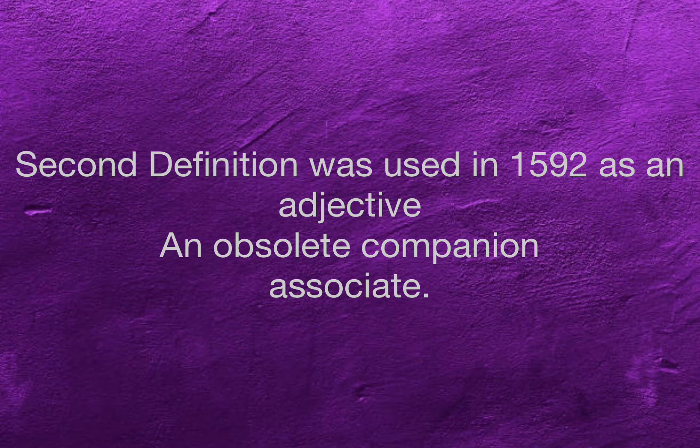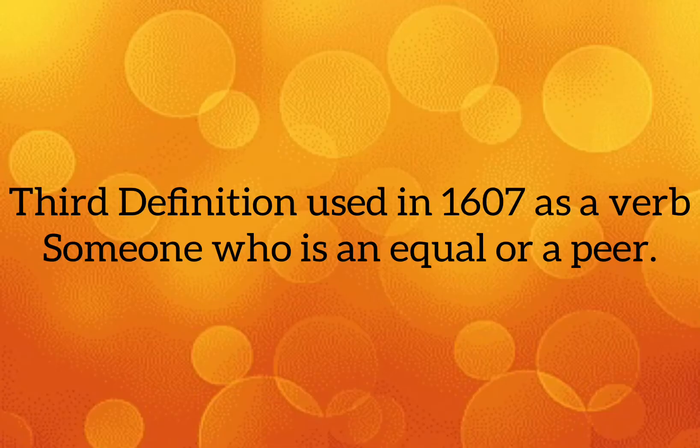The second definition was used in 1592 as an adjective — that was an associate or a companion, as a rival. The third definition, used in 1607, was as a verb, and that was someone who is an equal or a peer.